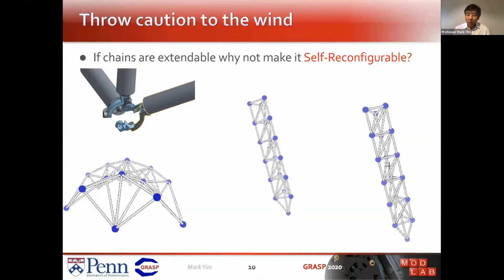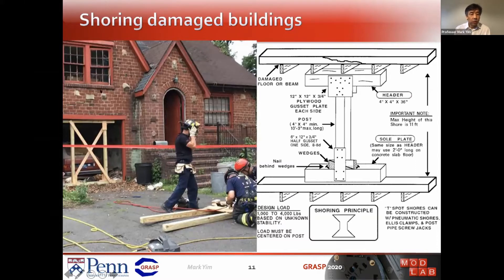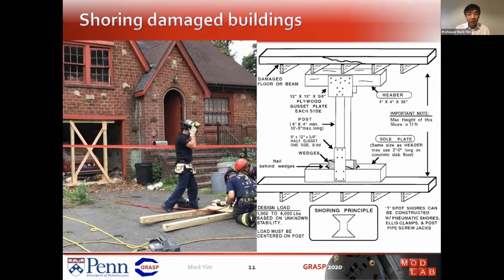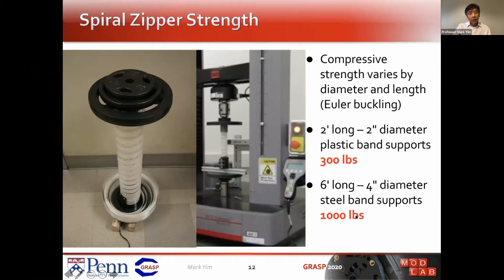Another thing that popped into my mind: I had done some work with firefighters before, and shoring a building is what they often do — putting together wooden structures in damaged buildings. That's really hard; they have to bring the wood and assemble it outside. Wouldn't it be great if a robot could do that? But for a robot to do that, it would have to support between 1,000 to 4,000 pounds. So you need this thing strong enough to hold up a building. It turns out this is not completely crazy because tube structures are almost optimal in terms of strength-to-weight ratio. We were able to get the plastic bands to support 300 pounds — you could stand on it. With steel bands, we're pretty sure they can do over a thousand pounds even when extended.